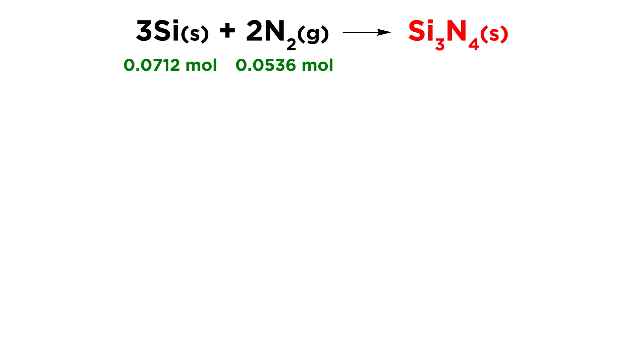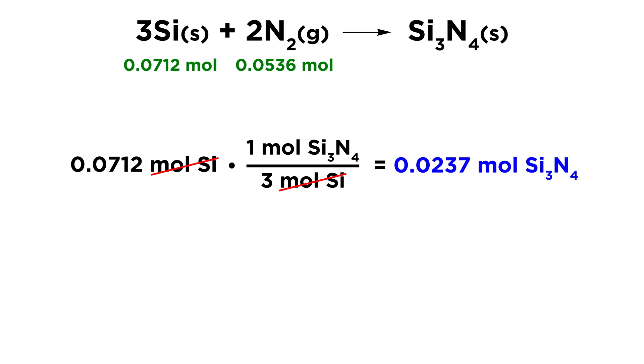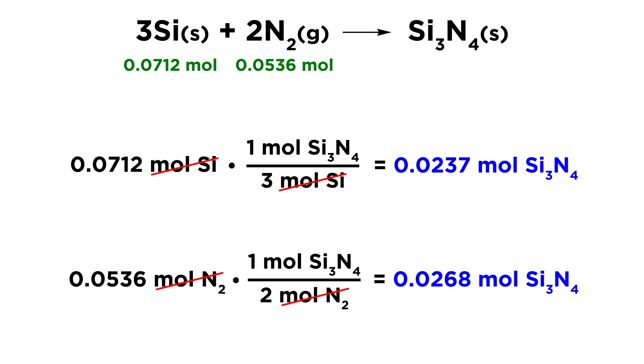Just to be thorough, let's look at this one other way. We can also take each reactant and see how much product we would make. So let's take our moles of silicon and multiply by 1 mole of product for every 3 moles of silicon. Moles of silicon cancel, and we get 0.0237 moles of product. Now let's do the same for the amount of nitrogen that we have. We're going to multiply by 1 over 2 because we have a 1 to 2 ratio with the coefficients. Moles of nitrogen cancel, and we get 0.0268 moles of our product. So the fact that silicon would make less of the product than nitrogen could upon both of those substances reacting completely, again tells us that silicon is the limiting reagent.